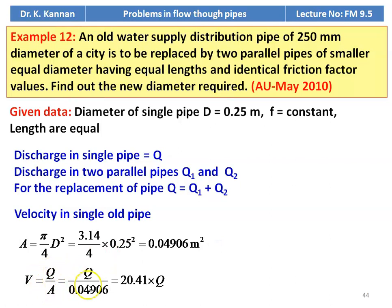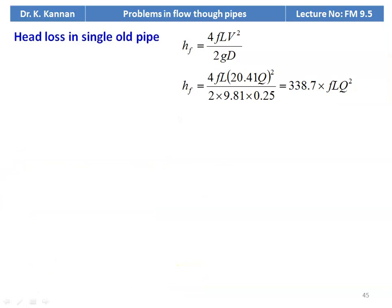Velocity equal to Q divided by A, equal to Q divided by 0.04906, which is 20.41 into Q. Q is unknown, so velocity in a single pipe equal to 20.41 times of Q. Head loss in the single pipe HF equal to 4FL V square by 2GD, so HF equal to 4F into 20.41Q whole square divided by 2 into 9.81 into 0.25. Simplifying: 338.7 into FL Q square.